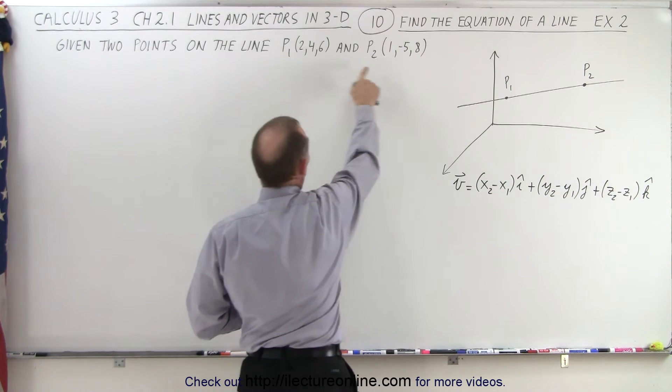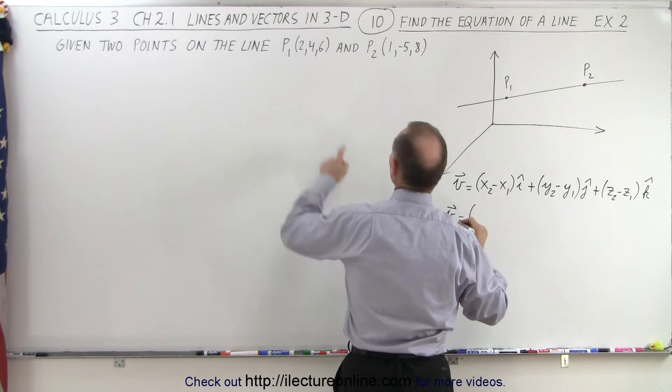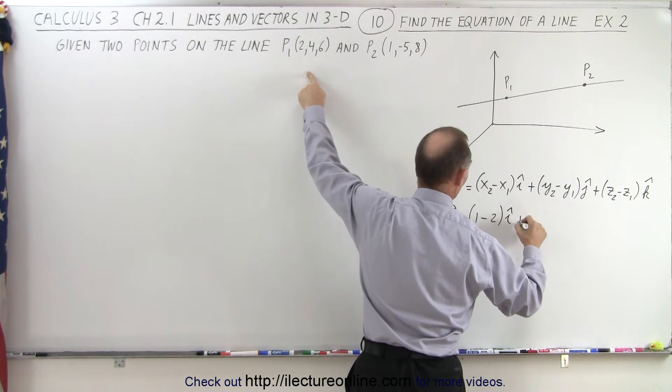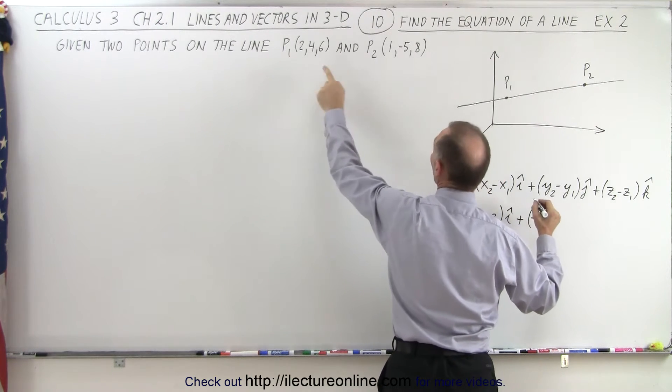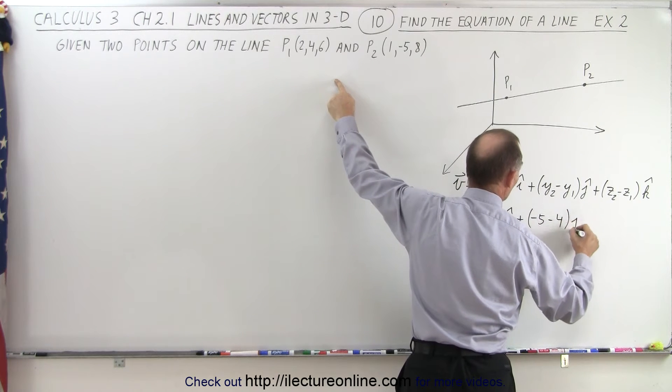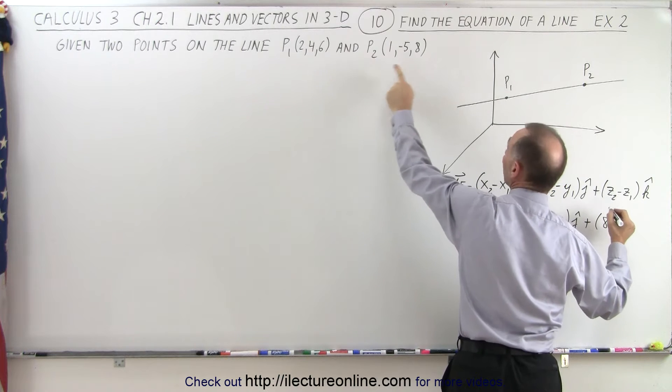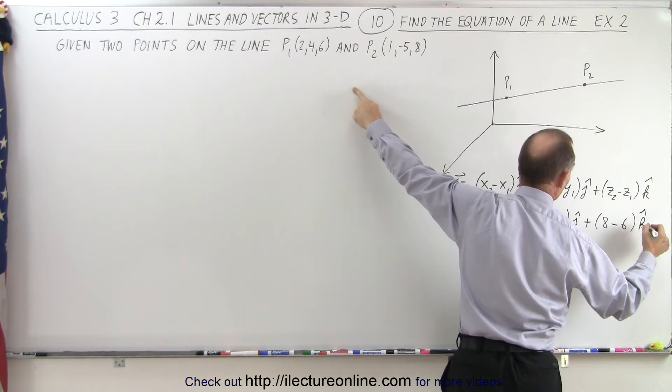So we're given the two points right here, so let's plug in the values. So v is going to be equal to x2, which is 1 minus x1, which is 2, in the i direction, plus y2, which is minus 5, minus y1, which is 4, in the j direction, plus z2, which is 8, minus 6 in the k direction.